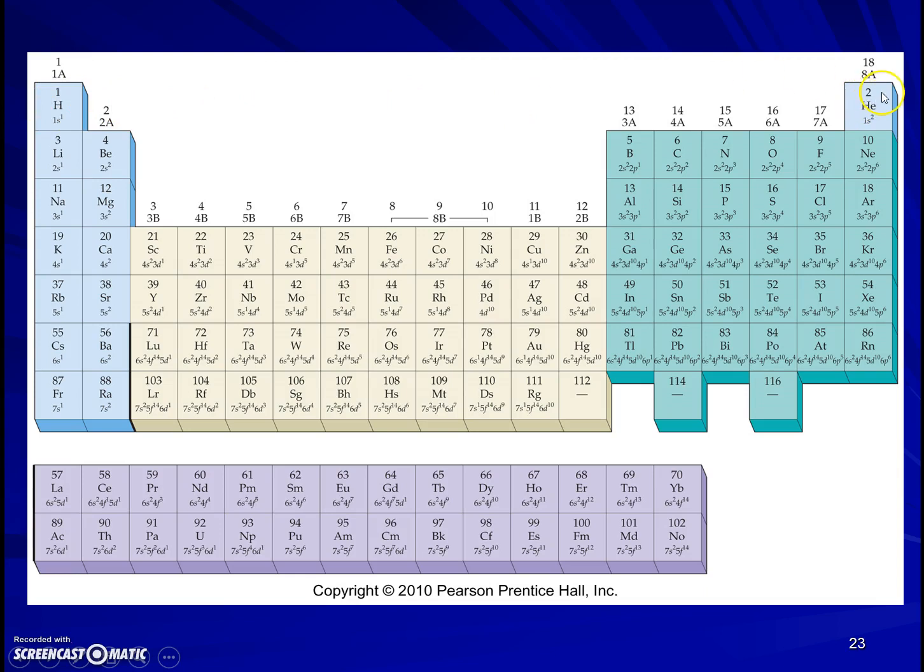If we think of helium as being over here, then we have 1s1, 1s2, 2s1, 2s2. Notice this block that sticks up is two elements wide, and every atom in this block, every element in this block, has a configuration that ends in s. The ones in the first row ends in 1s, then 2s, then 3s, and so on.